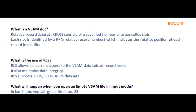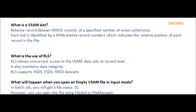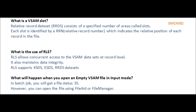Question: What is a VSAM slot? Answer: Relative Record Data Set consists of a specified number of areas called slots. Each slot is identified by a relative record number. RRDN indicates the relative position of each record in the file.